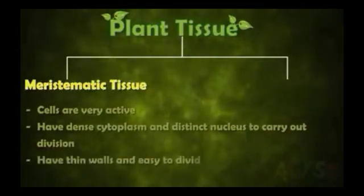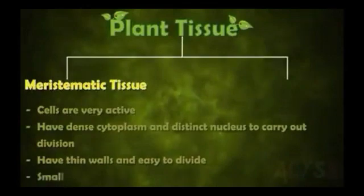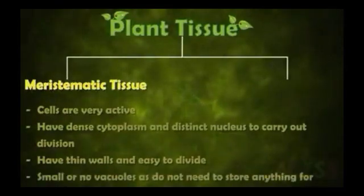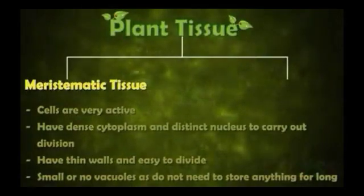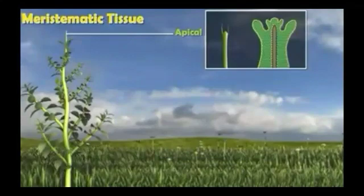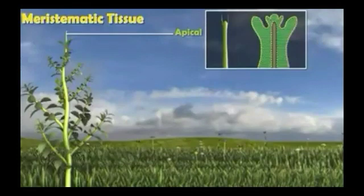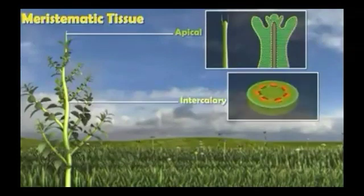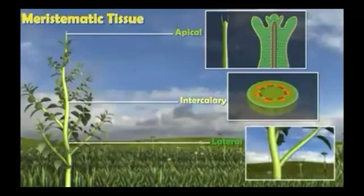Meristematic cells also have thin cell walls and hence they easily divide. They have no vacuoles because they don't have to prepare food or store anything for long. Meristematic tissues can be divided into three types: apical meristems found at the tips which increase the length, lateral meristems on the sides, and intercalary meristems.